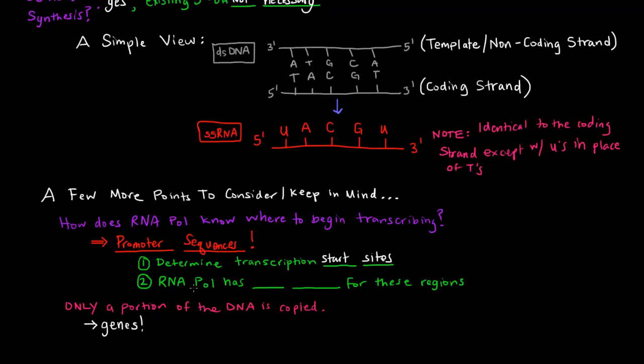The RNA polymerase has a high affinity for these regions. It's highly attracted to these regions. And that makes sense if you think about it. If the promoter sequences on the DNA are what determines where transcription is supposed to start, then it would make sense that the RNA polymerase would want to be attracted to that promoter sequence. And that is actually the case.